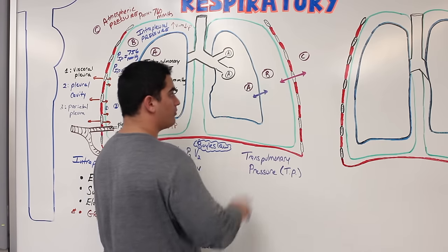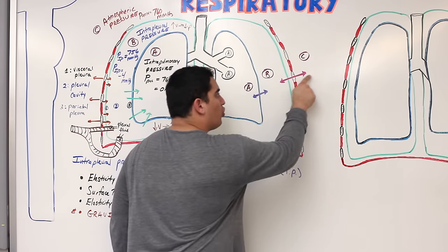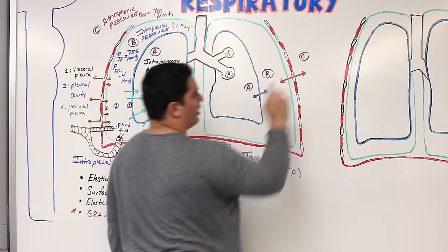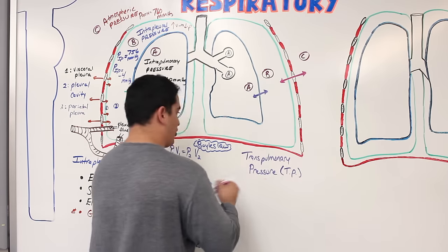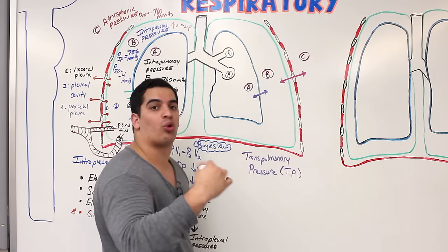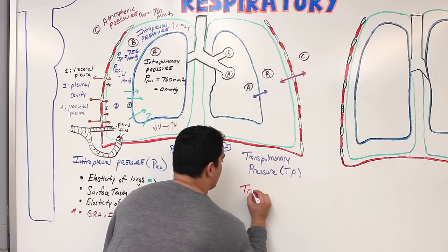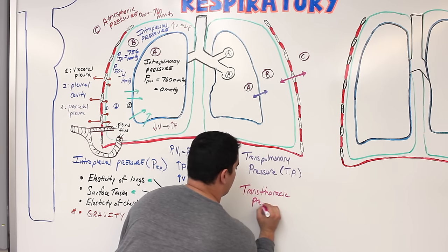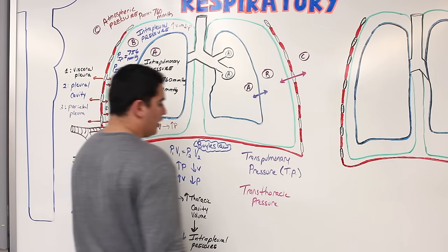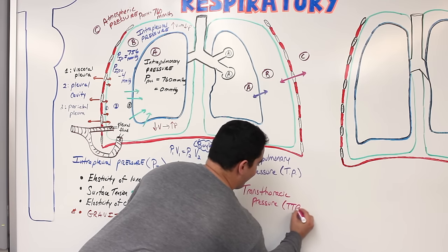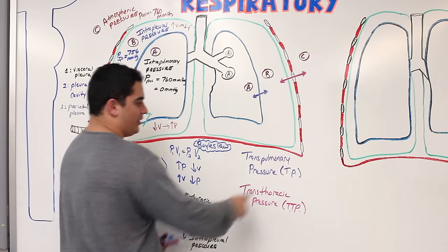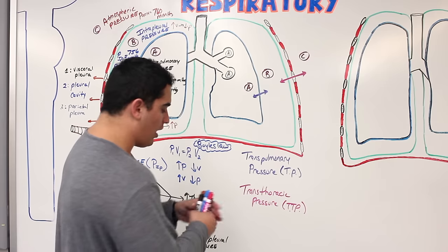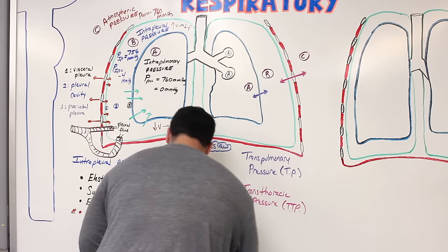Then there's a pressure exerted across the chest wall — the difference between intrapleural pressure and atmospheric pressure — called the transthoracic pressure, denoted TTP. And there is one more: from A all the way to C, the difference between intrapulmonary and atmospheric pressure, called the trans-respiratory pressure.